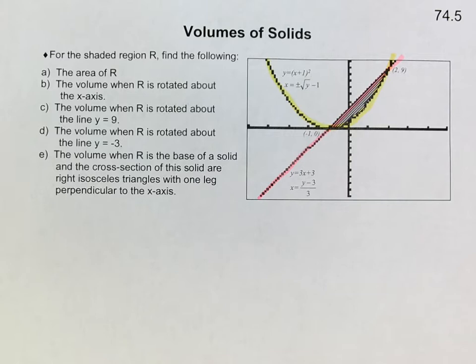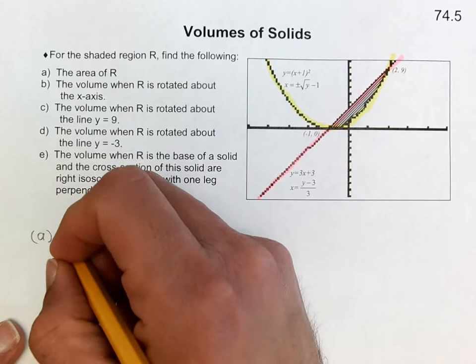This is lesson 74.5 and this will be the last lesson before you have your review and test. So let's take a look at these right here. We're going to start off with A, and A is from lesson 71, which is what we did at the very beginning.